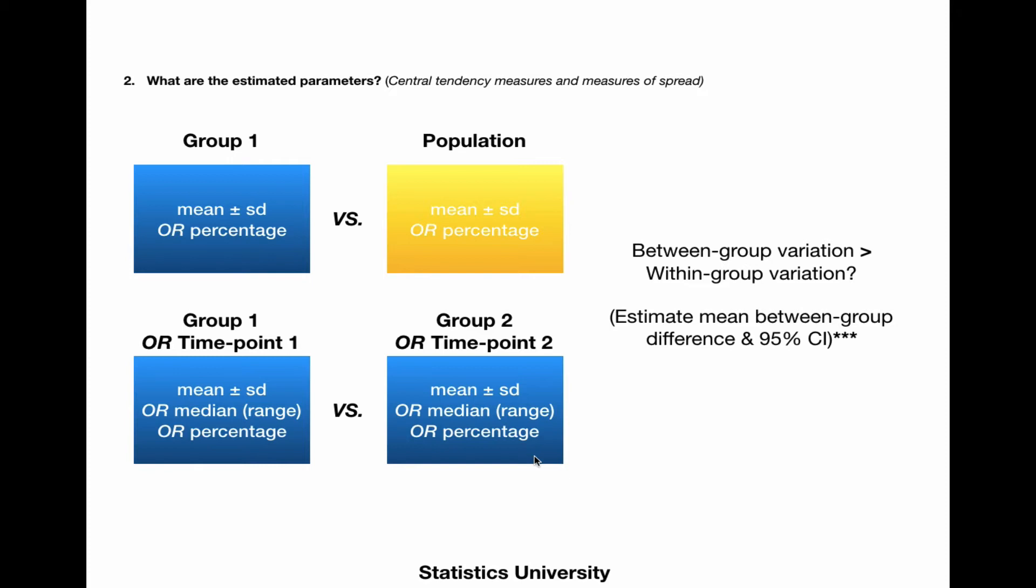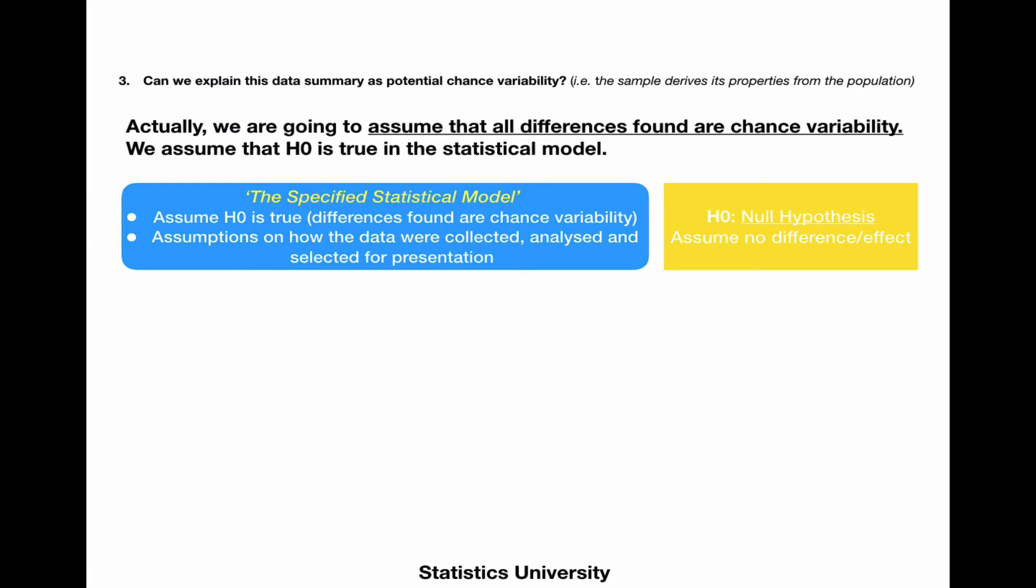The lower row of the former image is the scenario where we compare both groups in terms of means and standard deviation, or a median range or percentage. In this scenario, we want to know whether the between-group variation or difference is larger than the within-group variation or difference. What we're going to estimate is the mean between-group difference, and its 95% confidence interval.